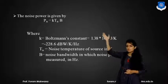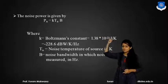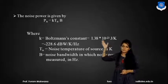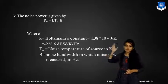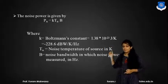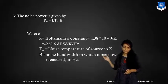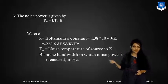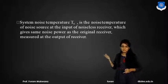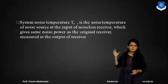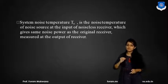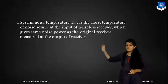The noise power PN equals K·T·BN, where K is Boltzmann's constant having a value of 1.38 × 10⁻²³ Joules per Kelvin (or −228.6 dBW per Kelvin per Hertz), TN is the noise temperature in Kelvin, and BN is the noise bandwidth in which the noise power is measured. The system noise temperature is the noise temperature of a noise source at the input of a noiseless receiver that would produce the same noise power at the output as the original system.